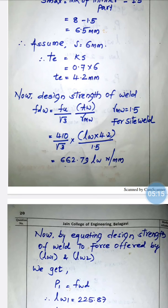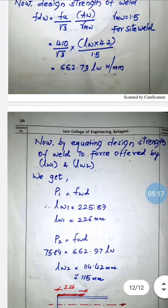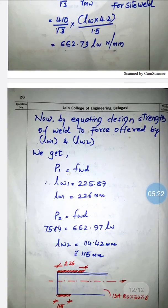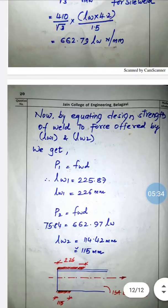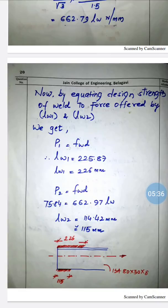We equate the design strength of the weld to the forces offered by lw1 and lw2. Setting p1 = fwd gives lw1 = 225.87 mm, which we round up to 226 mm or 230 mm. Setting p2 = fwd gives lw2 = 114.42 mm, which we take as 115 mm.